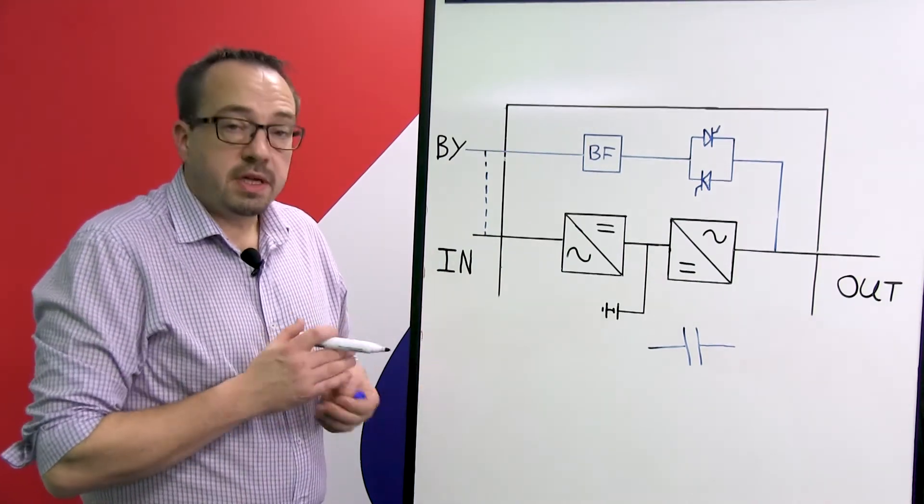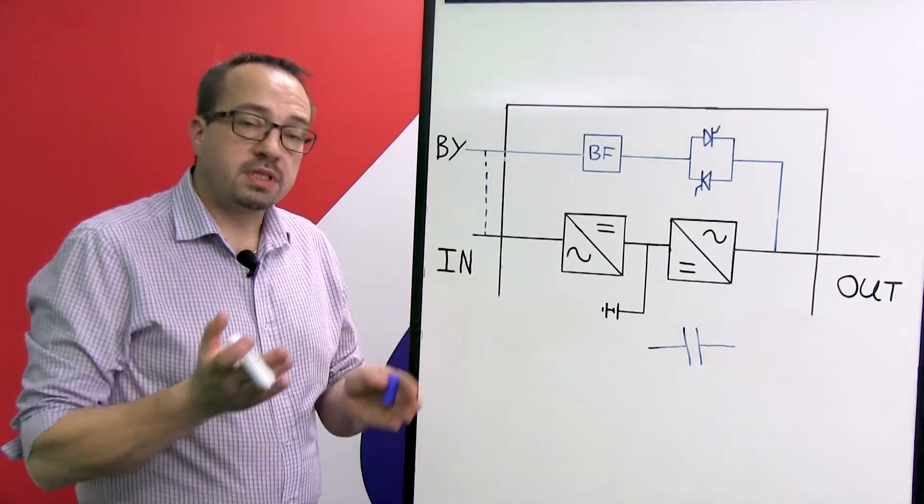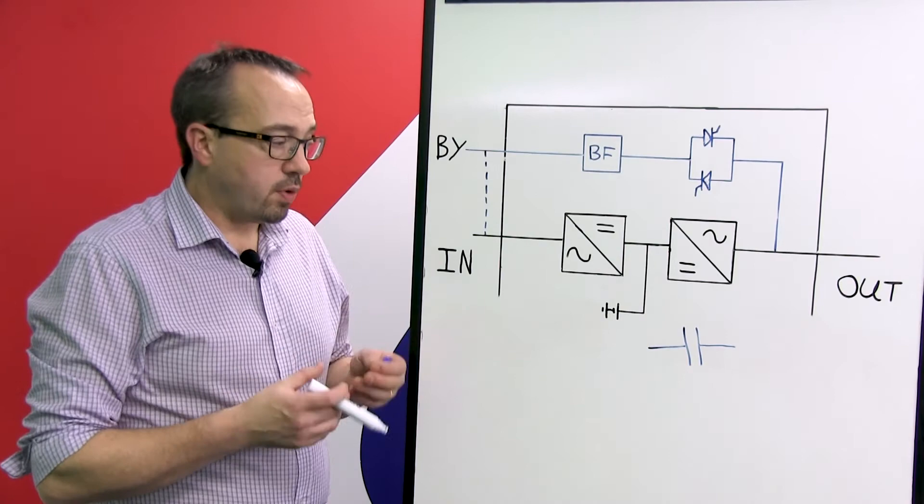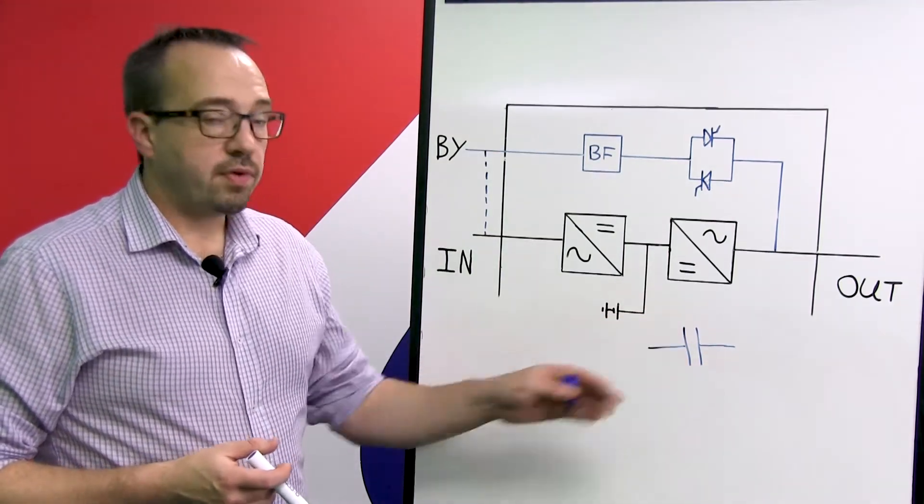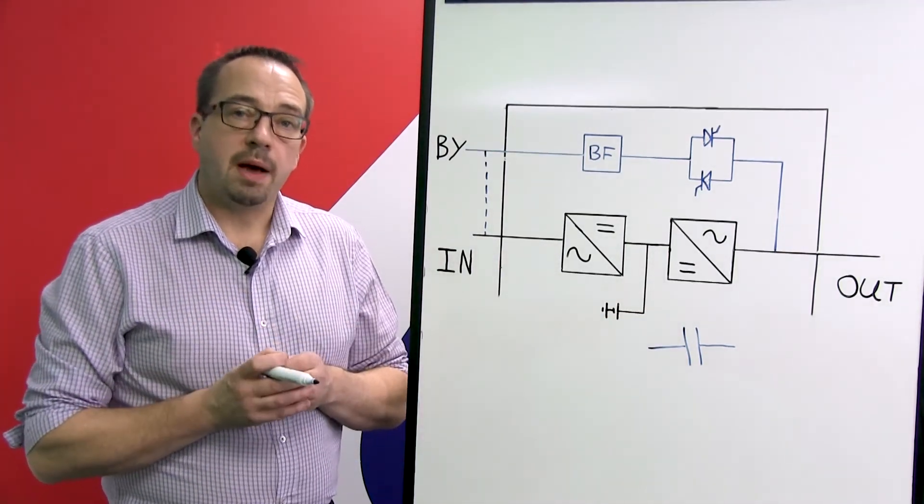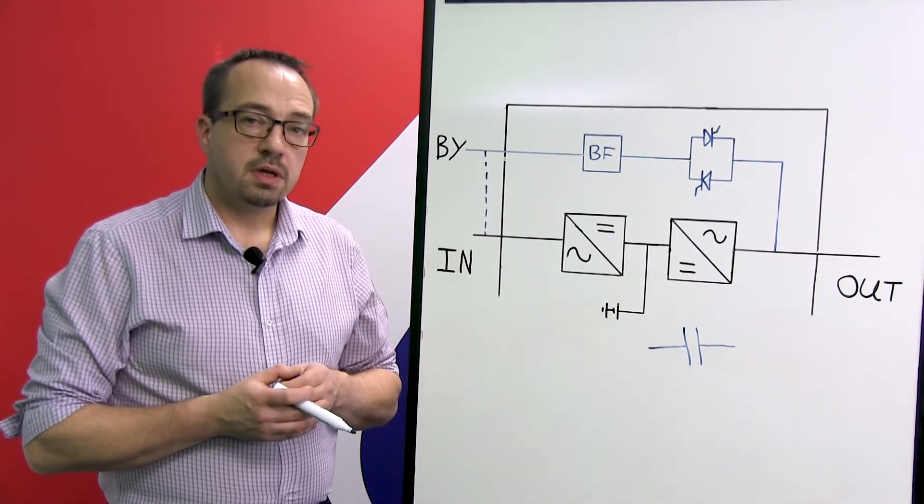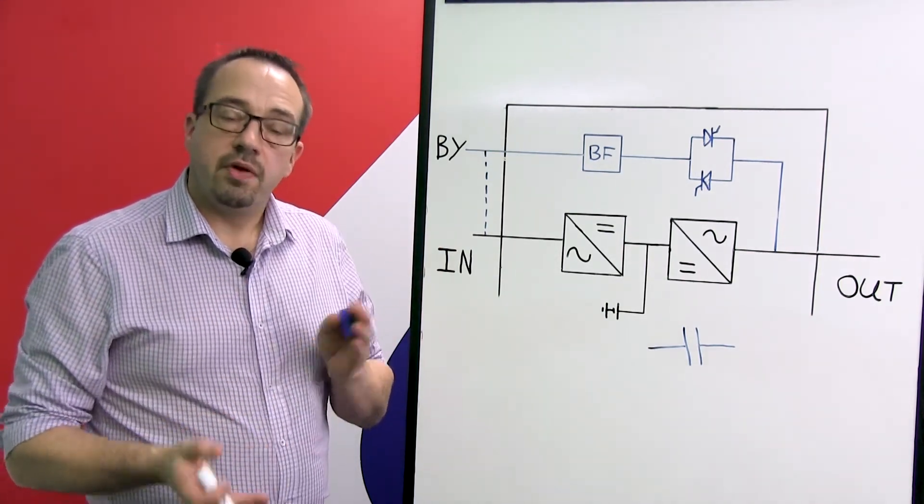And therefore when the main supply returns again, the process is simply reversed, and so inside the UPS we have banks of capacitors which can bridge that gap when the main supply fails and we transfer onto battery and vice versa.